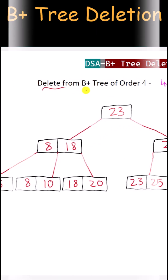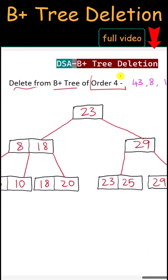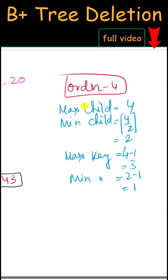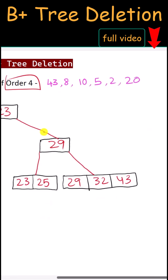Let's perform deletion in a B+ tree of order 4. The order is 4, which means the maximum number of children can be 4, the minimum children can be 2, the maximum keys can be 3, and the minimum keys can be 1.